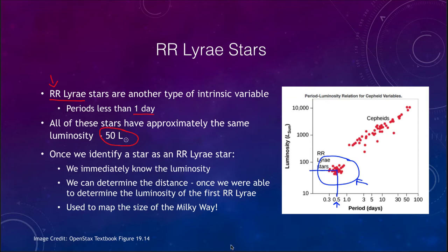Because all RR Lyrae stars have nearly the same luminosity — about 50 times the luminosity of the sun — as soon as we identify a star as an RR Lyrae star, we immediately know its luminosity and can therefore determine its distance. These stars have been used to map the size of the Milky Way, as they are very common in globular clusters, and we can use them to map out the extent of our galaxy.